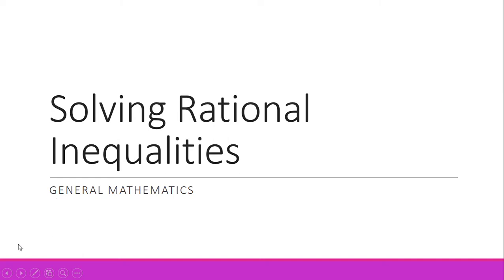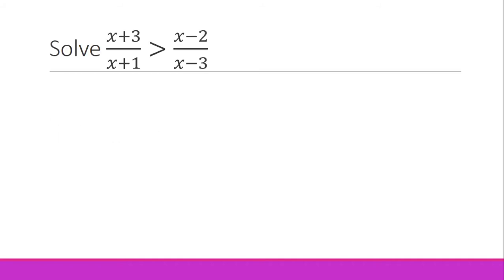It's another math day with teacher Jenny, and here I am with my last video for solving rational inequalities. The pattern we are going to talk about today is one where you've got on the left side a single rational algebraic expression, while on the right side you've got another rational algebraic expression — not zero, not a number.